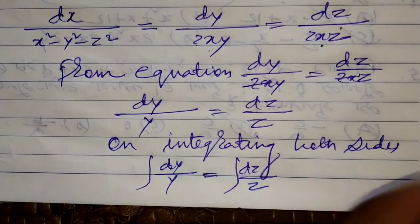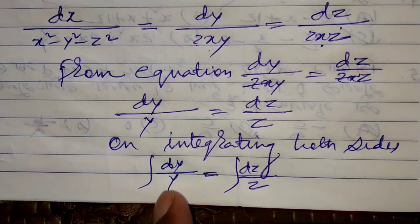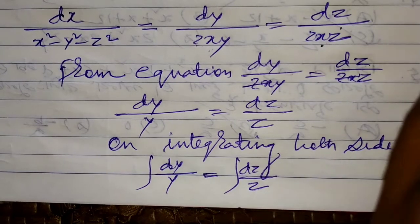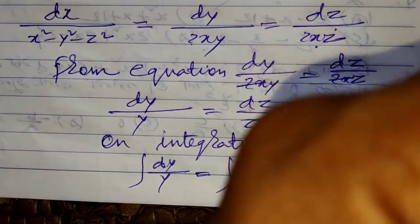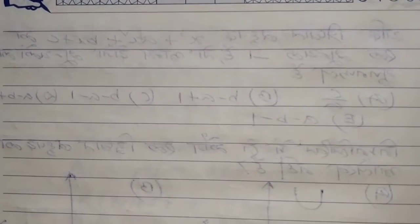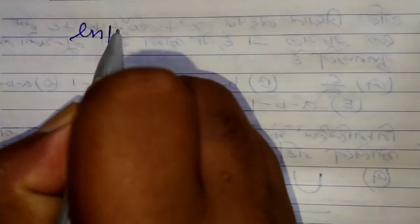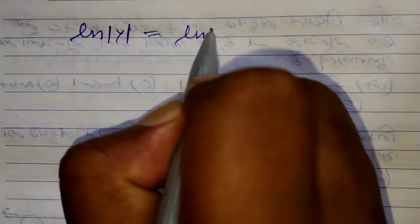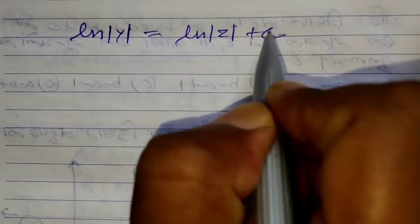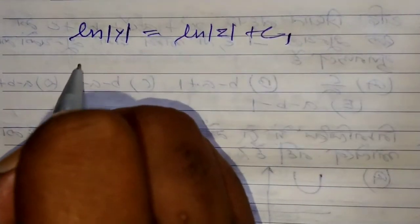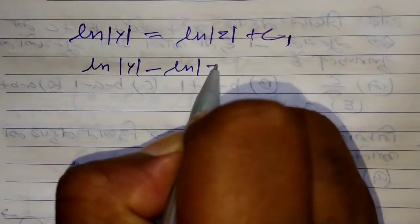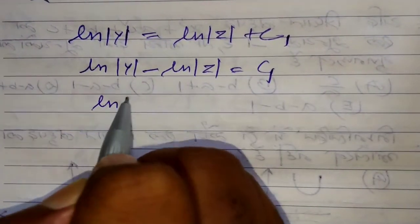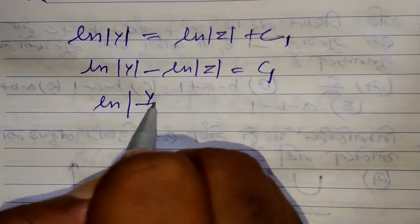Integration dy/y gives ln of y, and ln of z. ln|y| = ln|z| + c. Let's call this c₁. We can write this as: ln|y| - ln|z| = c. You can write this as ln|y/z| = c.